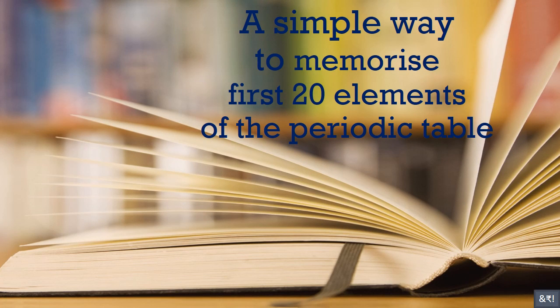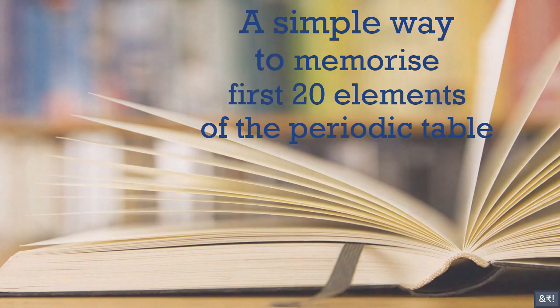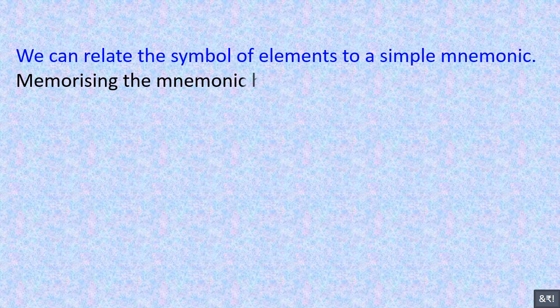A simple way to memorize the first 20 elements of the periodic table. We can relate the symbol of elements to a simple mnemonic. Memorizing the mnemonic helps us to remember the elements in correct order.